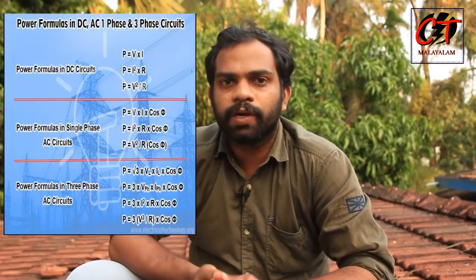We have AC electricity. The power formula is root 3 × V × I × cosφ. The power factor is seen in the video. The voltage is V and the current is I.